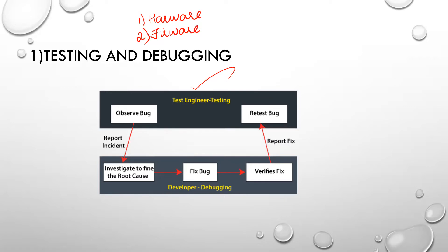In debugging, investigation is done to find out where there is an error. For example, with the same headset, if you don't get proper audio, in the debugging phase the root cause of why the audio is not received properly is found out. The investigation to find the root cause and fix the bug is done in debugging. So testing checks whether the function works properly, and debugging finds the root cause of any error.